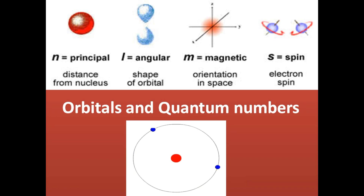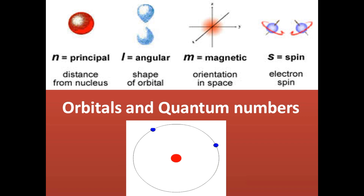Bismillahirrahmanirrahim. Dear viewers, today we will discuss another topic known as the quantum number. We will describe the nature of orbitals. Orbitals have already been discussed, and if you have not watched my previous lecture, you are requested to watch it via the link above before starting this topic. So basically, quantum numbers describe the nature of the orbitals.